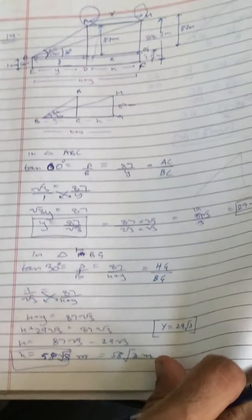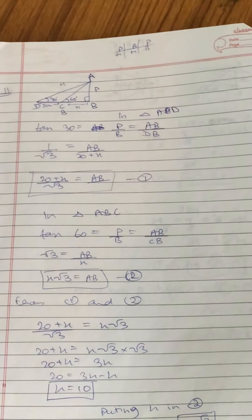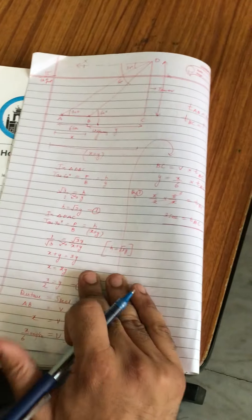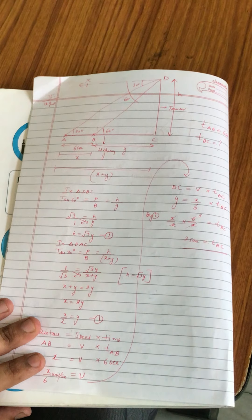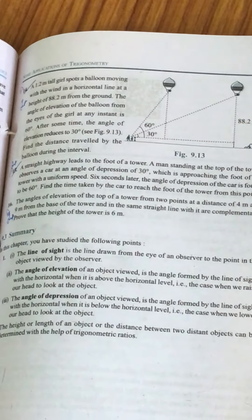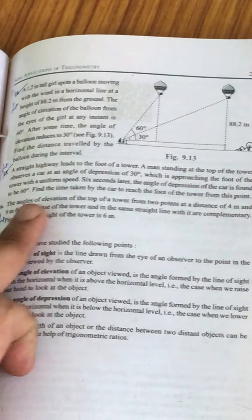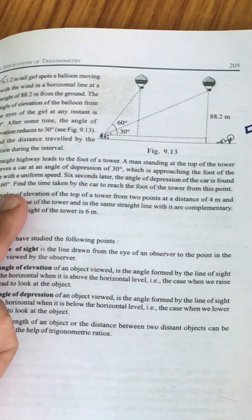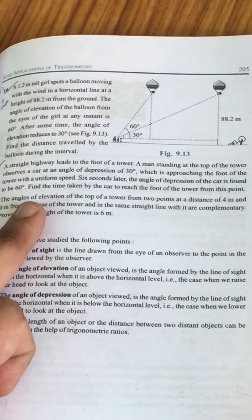Bahut important question hai class — bahut acche se karna. Sabse main hai figure — figure wrong hai toh sab kuch wrong ho jayega. Yeh teeno questions 14, 15, aur 16 bahut very important hain. Question number 15: a straight highway leads to the foot of the tower. A man standing at the top of the tower observes a car at an angle of depression of 30 degree, which is approaching the foot of the tower with a uniform speed. 6 seconds later the angle of depression of the car is found to be 60 degree. Find the time taken by the car to reach the foot of the tower from this point.